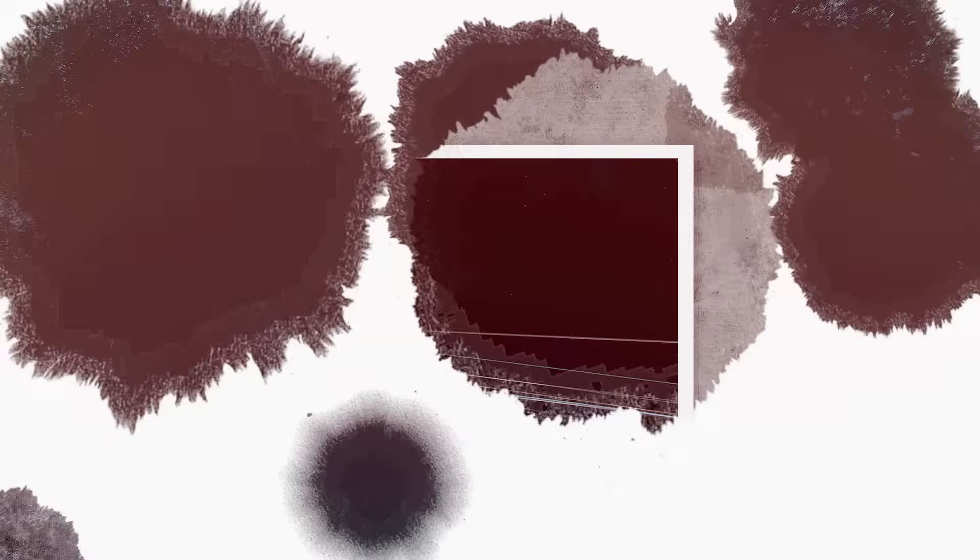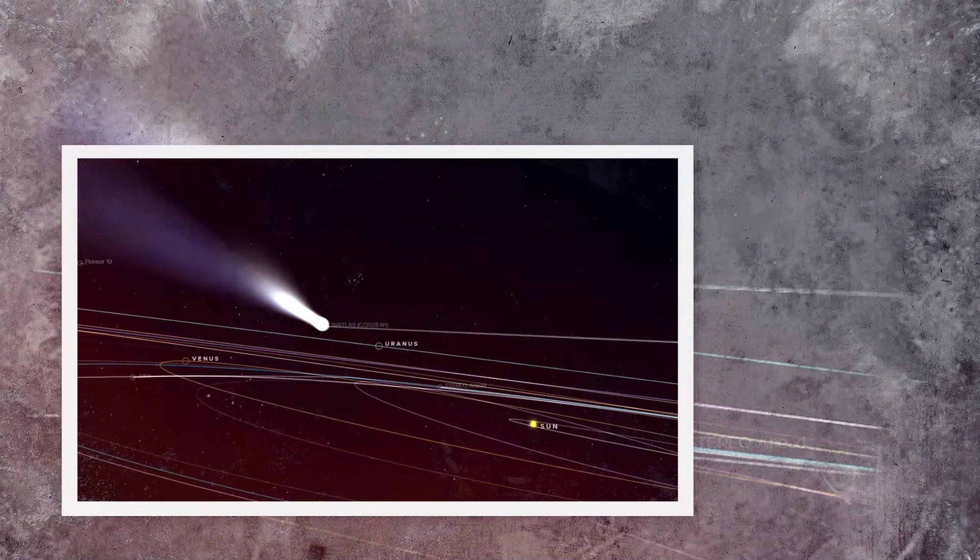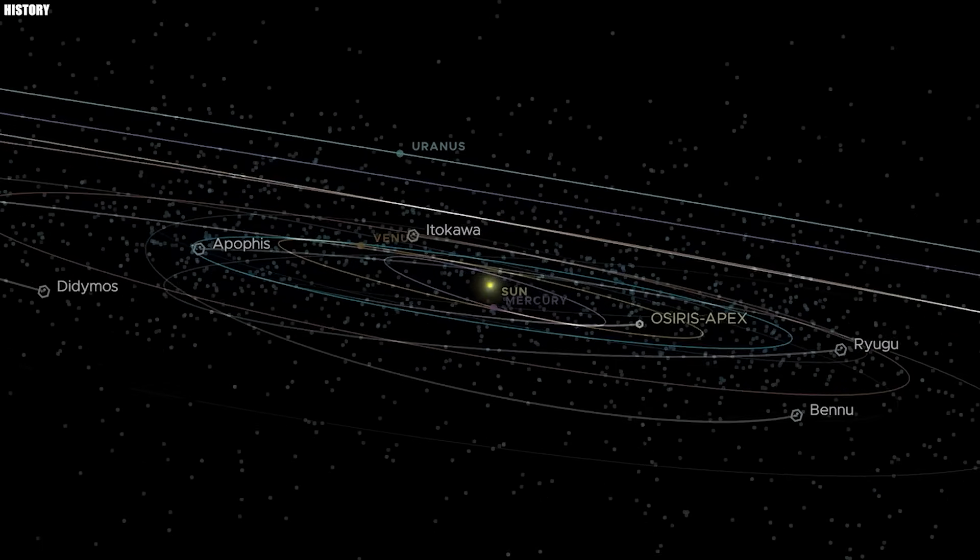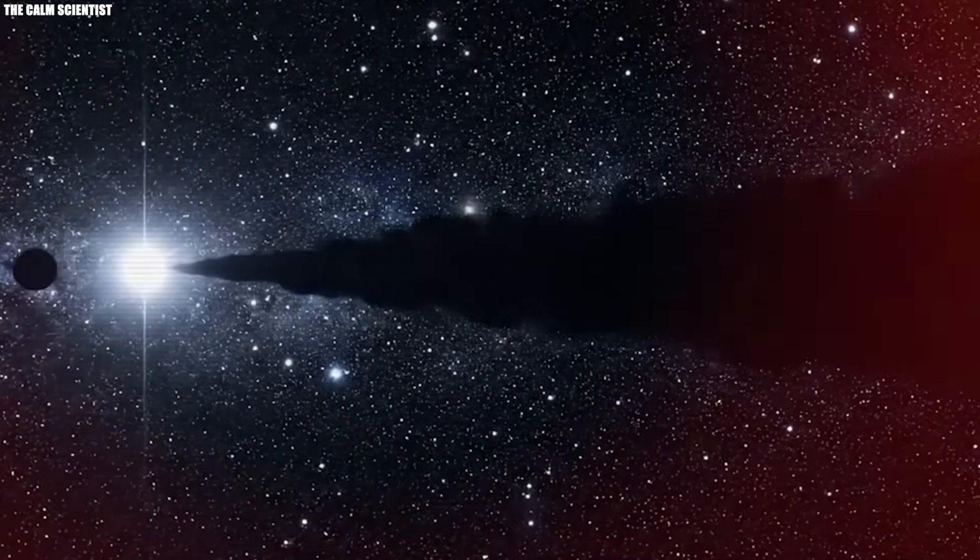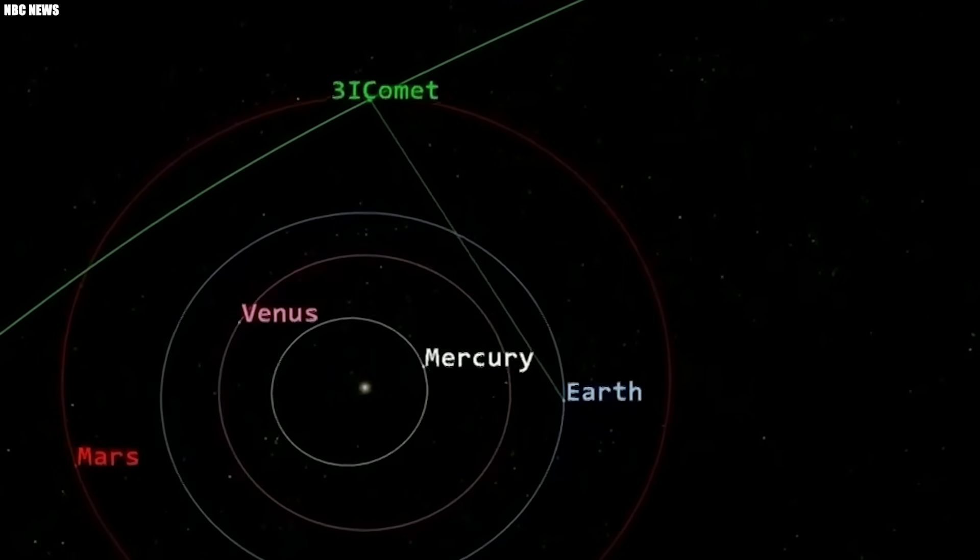Right away, scientists noticed its brightness was not stable. Within just two days, it flared up nearly six times brighter than it had been before. Not gradually, not smoothly. A sudden burst, followed by dimming, followed by another burst. Some thought it was outgassing, which is common for comets. But the pattern did not fit. It was too fast, too rhythmic, too clean.